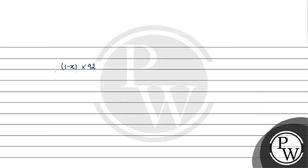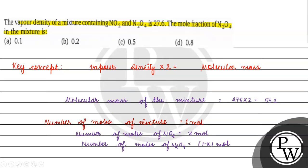Plus x into 46 which is the molecular mass of NO2 equals 55.2. This gives 92 minus 92x plus 46x equals 55.2. So 92 minus 55.2 equals 46x, which gives 36.8 by 46. X ki value comes to 0.8. Number of moles of NO2.